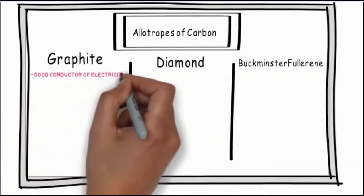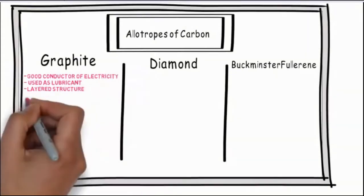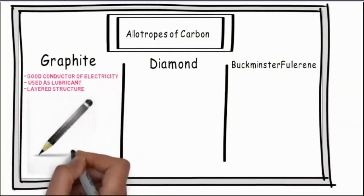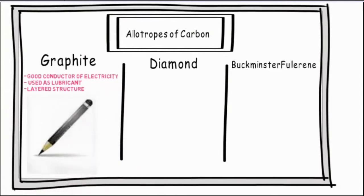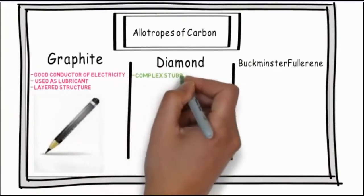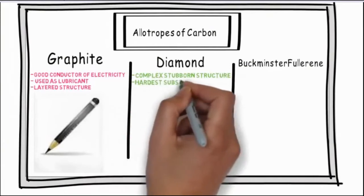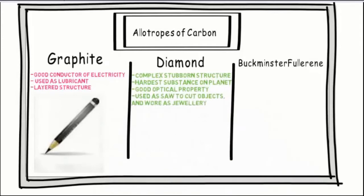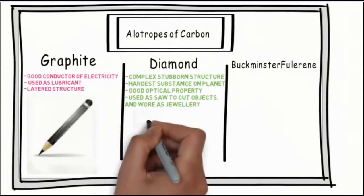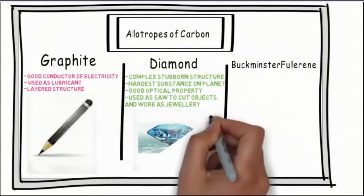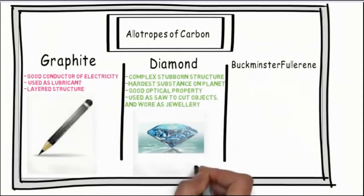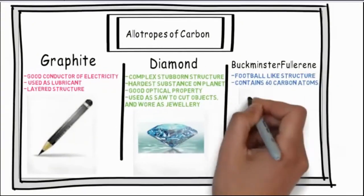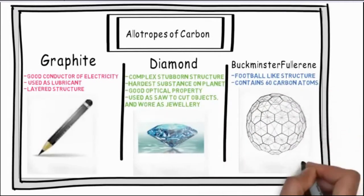Graphite has good electrical conductivity, it acts as a lubricant and has a layered structure. The pencil we use has its lead made of graphite. Diamond has a complex structure and good optical properties. It is the hardest substance on planet earth. Buckminster Fullerene is made up of 60 carbons and it has a football-like structure.